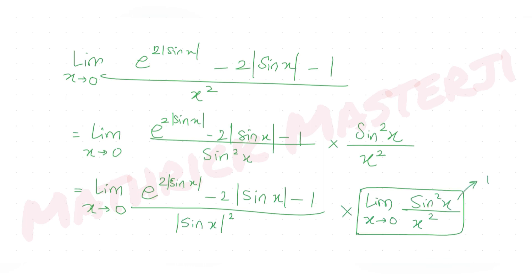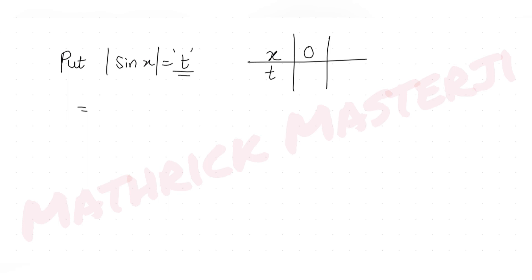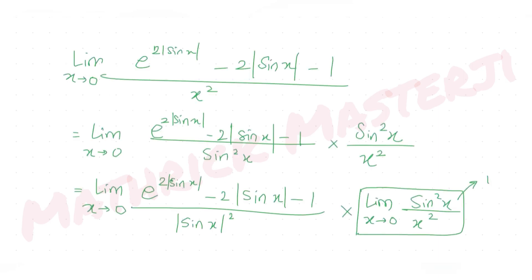Now every term has |sin x|, so let's use substitution: let t = |sin x|. As x→0, sin(0) = 0, so t→0. The expression becomes limit t→0 of [e^(2t) - 2t - 1] / t².